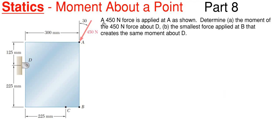So what we have here in this problem is that we have a 450 Newton force applied here at A as shown, and we have to determine two parts for this problem. We have to determine the moment of this 450 Newtons about point D, and then we have to determine the smallest force applied down here at point B that creates the same moment about point D that we got earlier.